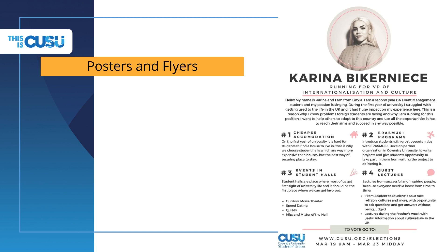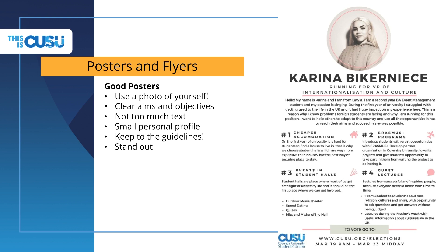Posters or flyers are some of the most popular methods of campaigning, however it's quite easy to fade into the background with a rushed or thoughtless poster. Remember to use a good photo of yourself — this has to be easily recognisable as you. A head and shoulders profile shot works really nicely. One thing to avoid is any group photos. It's recommended to have your aims and objectives highlighted in a way that makes them easy to read, using titles or little graphics to help break up your manifesto. Keeping it simple is also important — finding the balance between too much and too little text is really important.